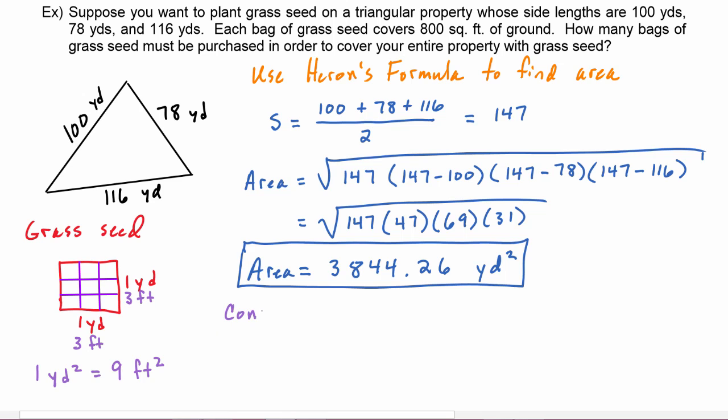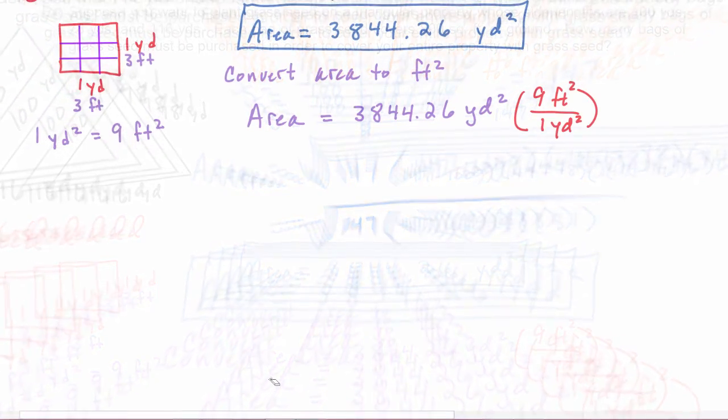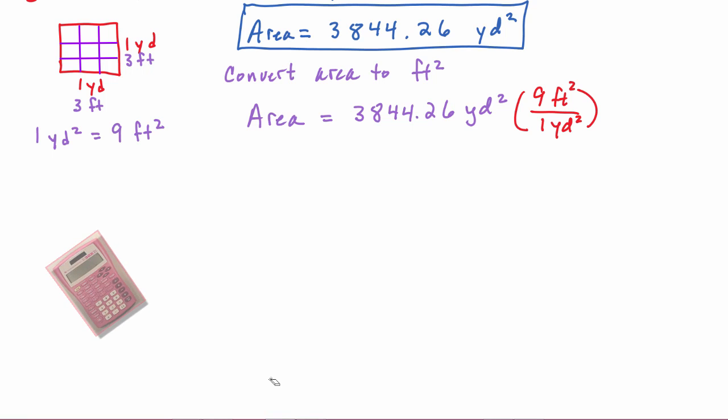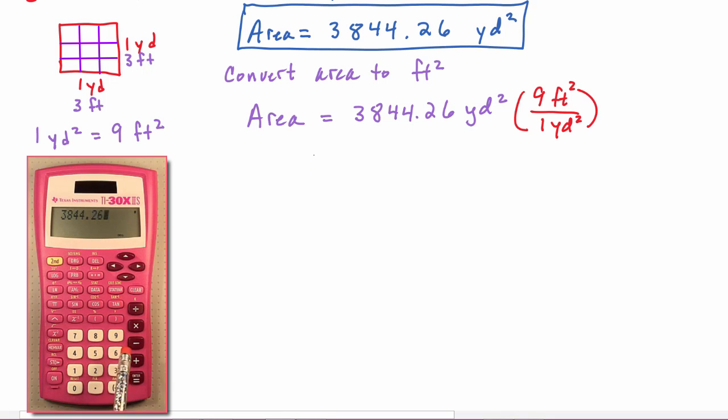So if we convert the area to square feet we will have to multiply it by nine. So we'll take that 3844.26 square yards and multiply it by a conversion factor of one square yard in the bottom and nine square feet in the top. Punching that into our calculator, we find out that the area is 34,598.34 square feet.